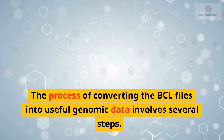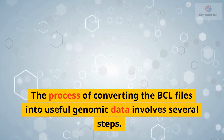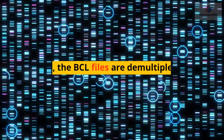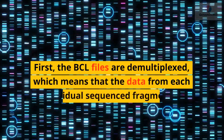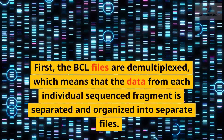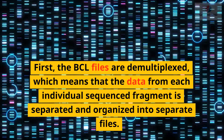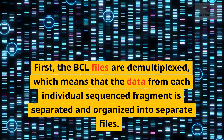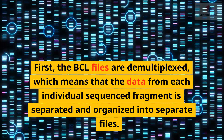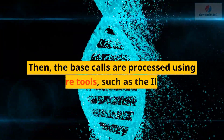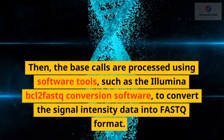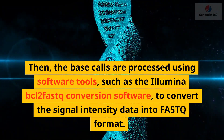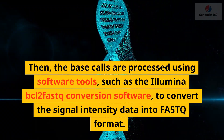The process of converting the BCL files into useful genomic data involves several steps. First, the BCL files are demultiplexed, which means that the data from each individual sequenced fragment is separated and organized into separate files. Then, the base calls are processed using software tools, such as the Illumina BCL2FASTQ conversion software,